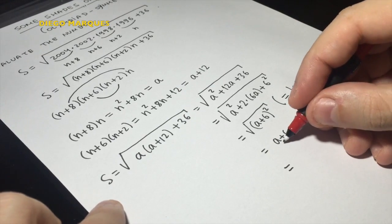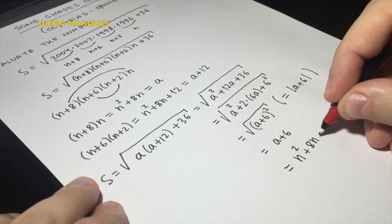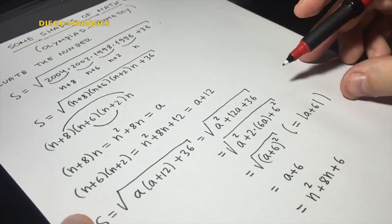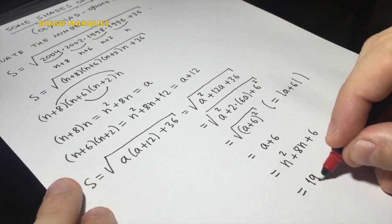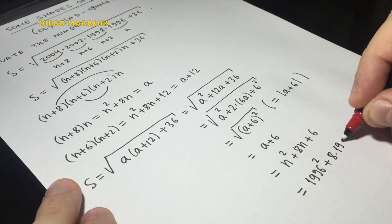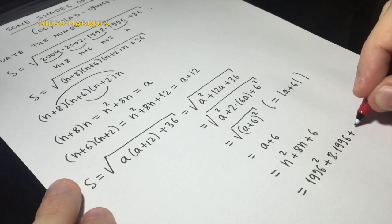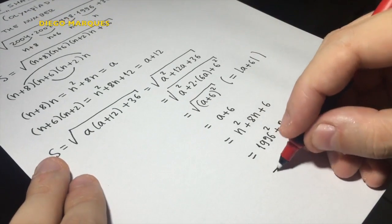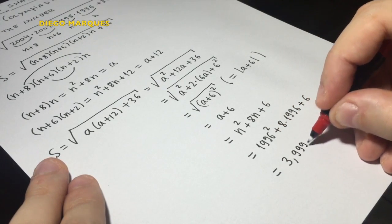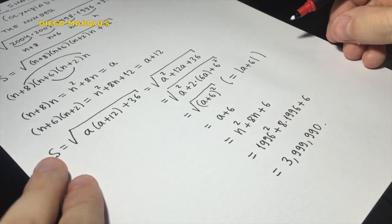But what's a? a is n square plus 8n. So this plus 6. And what's n? n is 1996. So this is 1996 square plus 8 times 1996 plus 6. And making this calculation, this is 3,999,990.